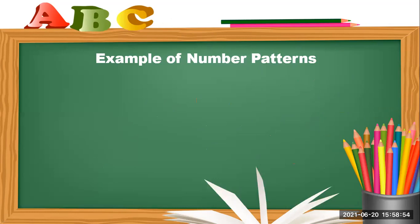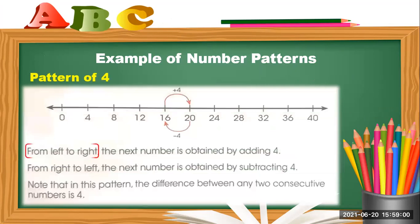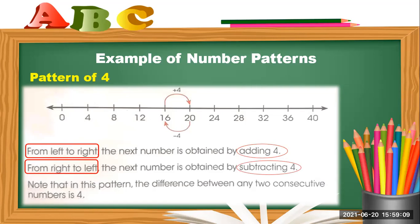Here is another example: the pattern of four. As you can see here, from left to right the next number is obtained by adding 4, and from right to left by subtracting 4. Note that in this pattern, the difference between any two consecutive numbers is 4.